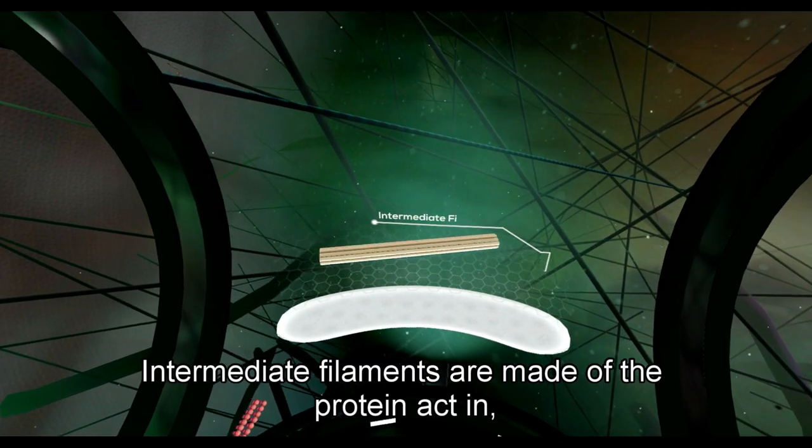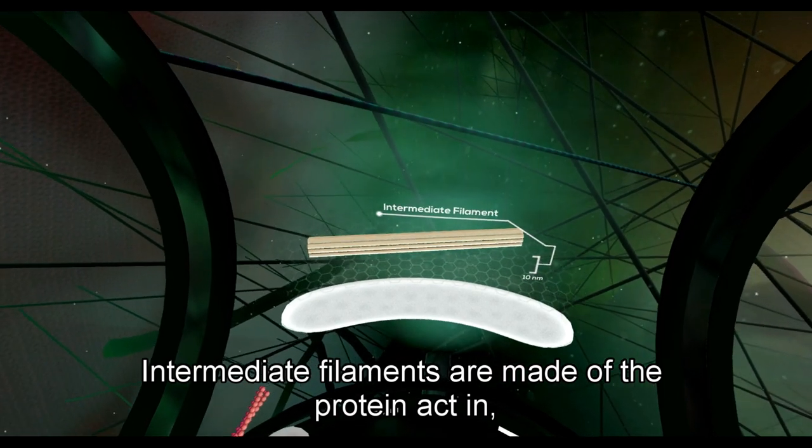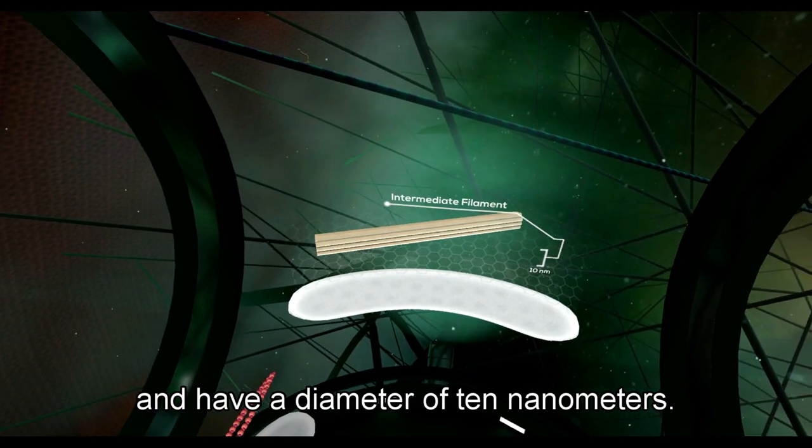Intermediate filaments are made of the protein actin, and have a diameter of 10nm.